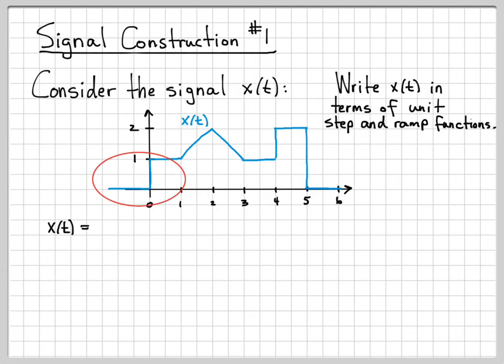The first part right here is at negative time, the signal is zero. And then at time zero, we step up to one. That should sound like a unit step function. So the first thing I'm going to write down is the unit step function. We know that the unit step function stays constant for all time with the value of one, so that we know this isn't the final answer. But u(t) at least gets us the correct part of the signal for times zero to one.